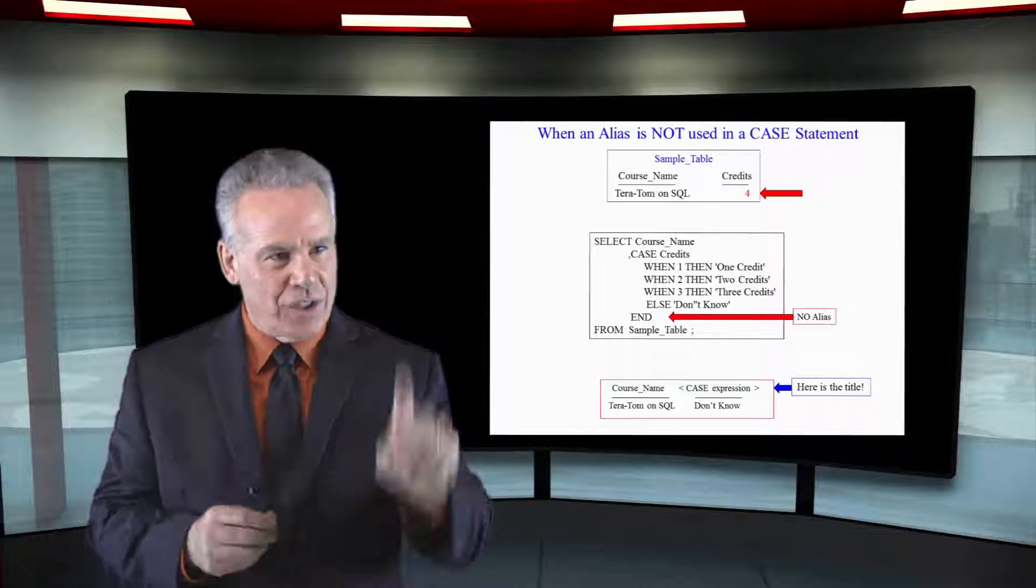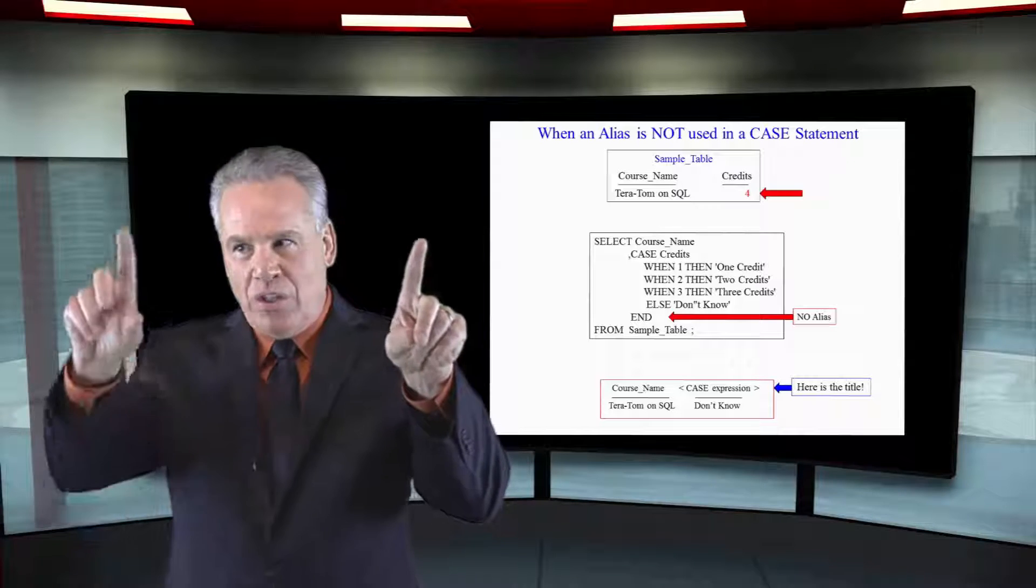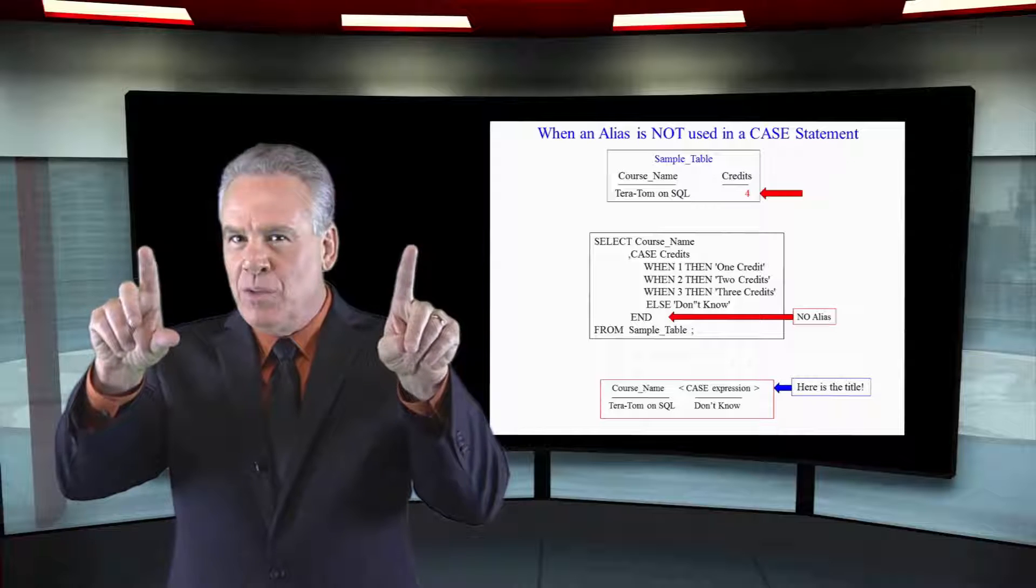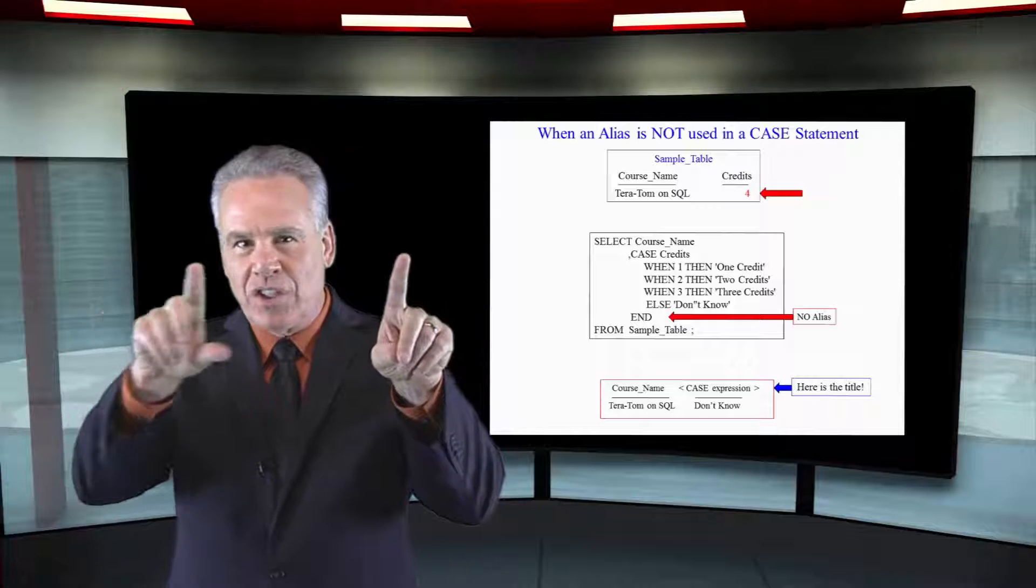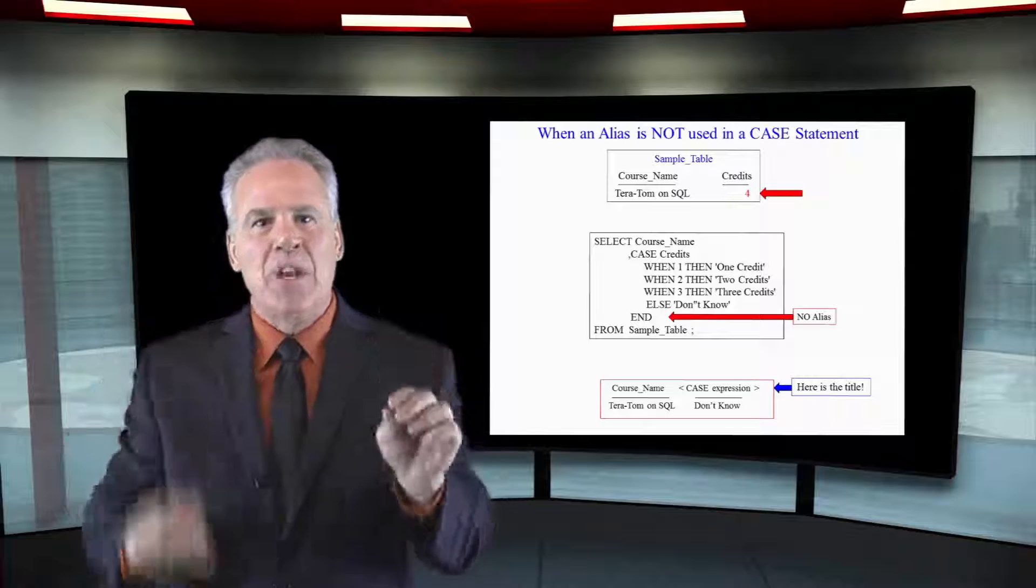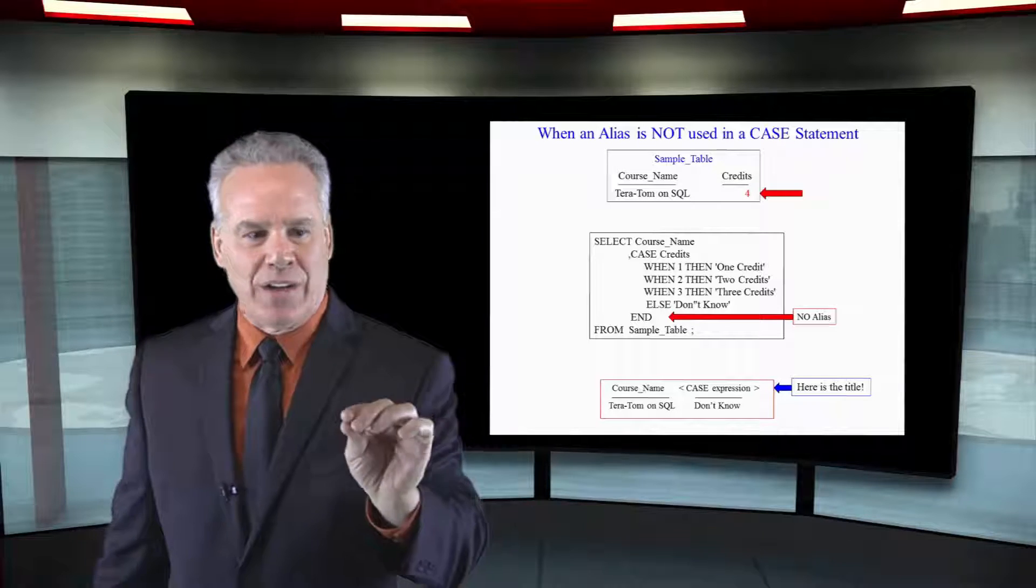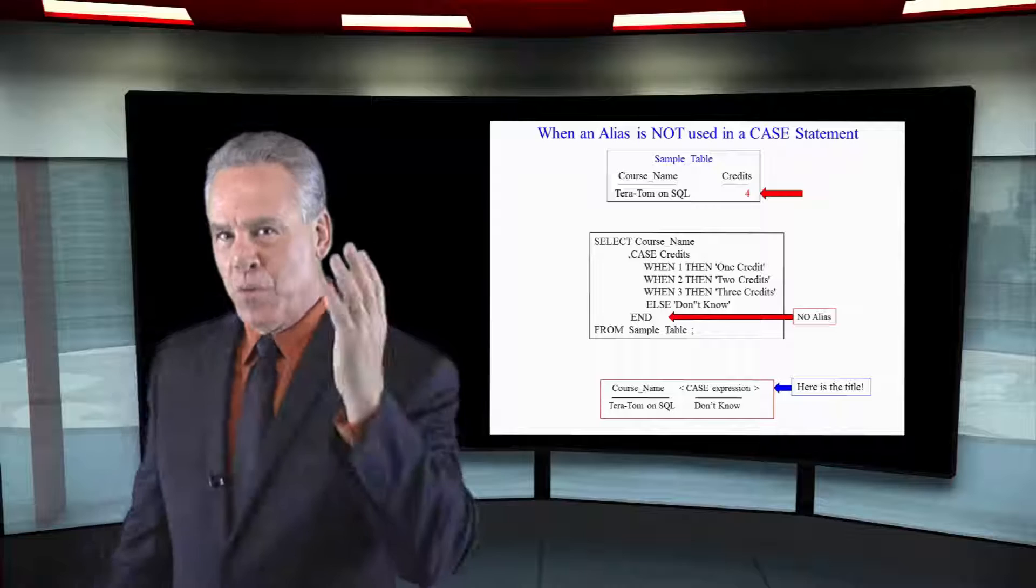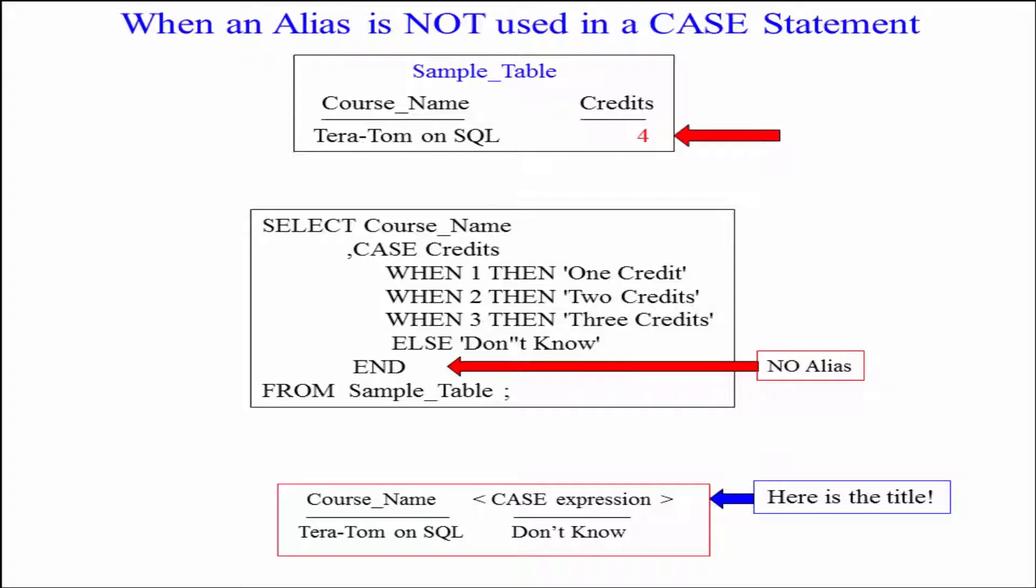We say else single quote don't know single quote, but the system would get confused if it saw just a single apostrophe here because now there would be three single quotes. So it's called an escape character. We want don't know and we want the apostrophe, so we have to say single quote, single quote, single quote, and they go oh that's not really the end of the literal. It's a single quote. So when it sees the one at the end it says it's don't apostrophe no.